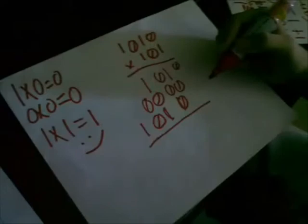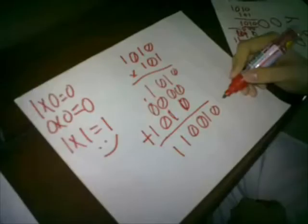Then, 1 times 0 equals 0, and 1 times 1 equals 1. 0 times 1 equals 0, and 1 times 1 equals 1.